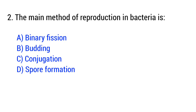Question number 2. The main method of reproduction in bacteria is? The right answer is option A: Binary fission.